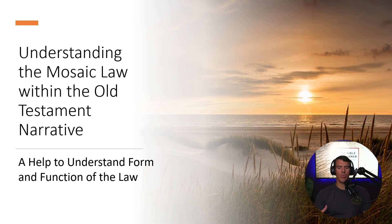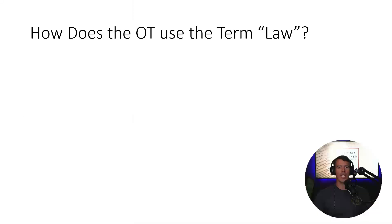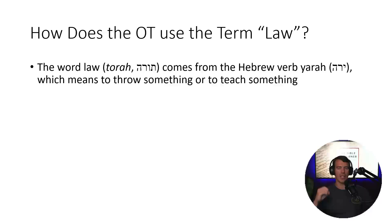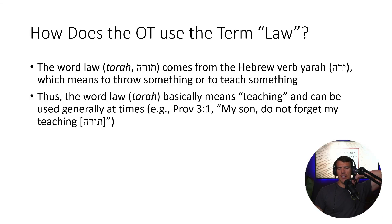I want to approach it from a different standpoint today and talk about the Mosaic law from the standpoint of why it's situated where it is in the biblical storyline, and how that can help us understand the function of biblical law. When we talk about the Mosaic law, we need to specify that we are talking about the Mosaic law. The Old Testament uses the term law in other ways. The English word comes from the Hebrew word Torah, which comes from yara, meaning to throw something, and thereby to teach something.